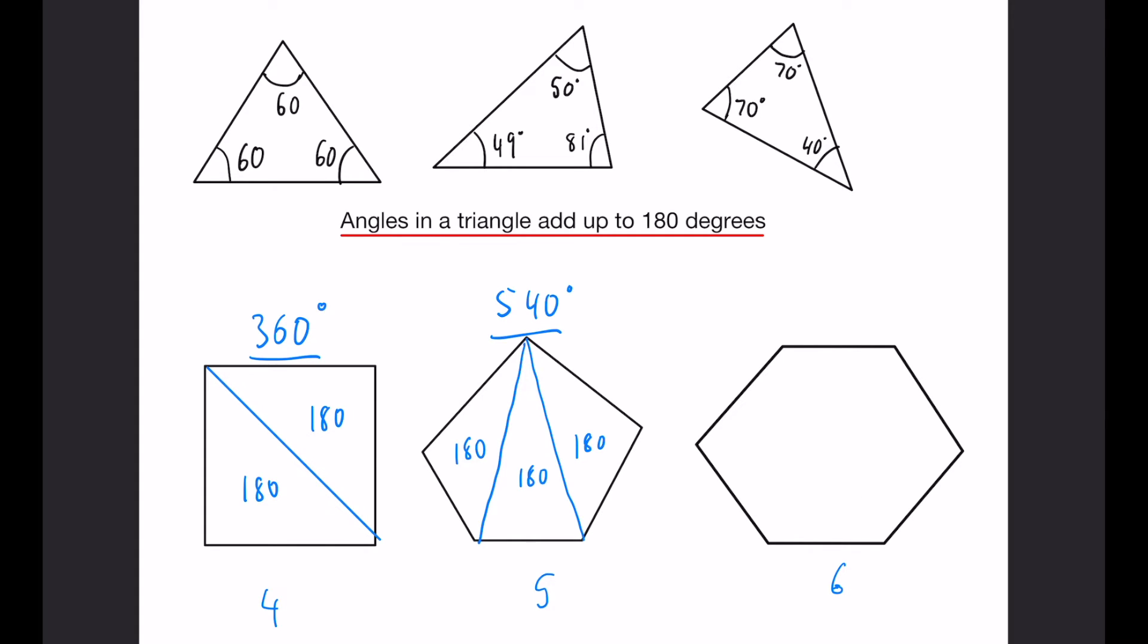And finally, pause the video, see if you can work it out for yourself first. But if we draw those three lines again, you can pick any point, this is going to work from anywhere. But this time, we have four lots of 180. And four times 180, you can take as much time as you need, but that makes 720.